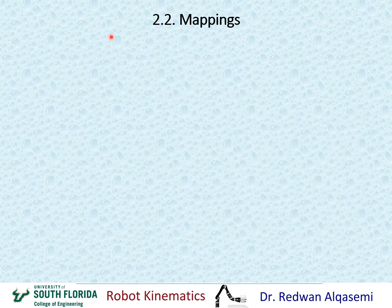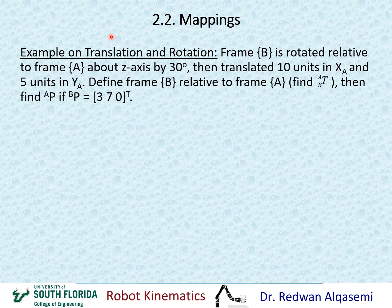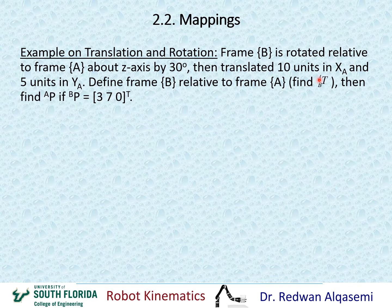Now let's take an example on translation and rotation together. Frame B is rotated relative to frame A about the Z axis by 30 degrees, then translated 10 units in XA and 5 units in YA. Define frame B relative to frame A — find T of B relative to A — then find P relative to A if P relative to B is [3, 7, 0] transpose.